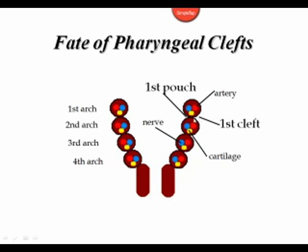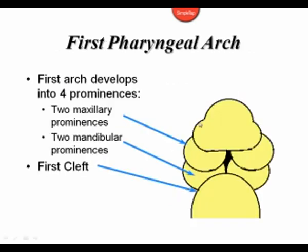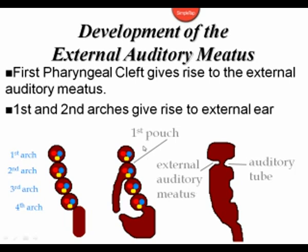We can talk about the fate of the different components of the pharyngeal arches, starting with the fate of the pharyngeal clefts — that is, what happens to the clefts and the ectoderm on the outside of these pharyngeal arches. The first arch is going to develop into four prominences: two maxillary prominences and two mandibular prominences. Beneath that will be the first cleft, which is going to invaginate and eventually give rise to the external auditory meatus.